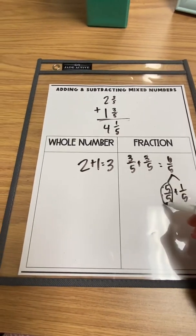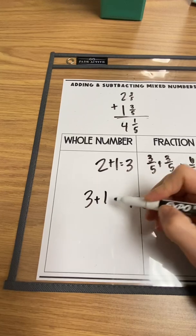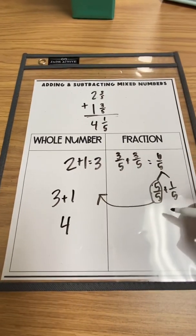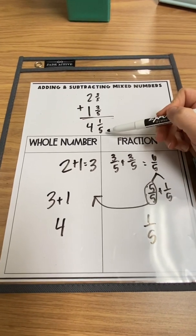And then they know to take that hole and regroup it with their other holes. So 3 holes plus 1 more hole is 4 holes. And then they're left with 1 5th of their fraction, which gives them 4 and 1 5th as their sum.